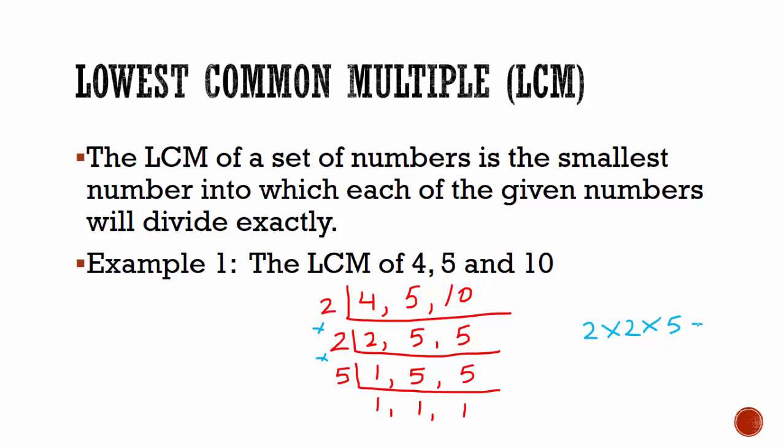2 multiplied by 2 is 4. 4 multiplied by 5 is 20. The LCM of 4, 5, and 10 is equal to 20.